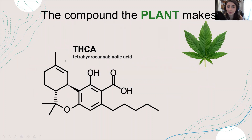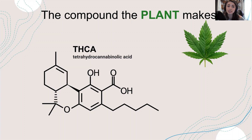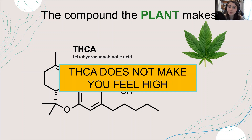The compound that the cannabis plant actually synthesizes is THCA — tetrahydrocannabinolic acid. The acid part is really important: the plant produces all of its cannabinoids in the acidic form, and the acidic form is not as active in our body. We want to change from THCA to just THC. THCA does not make you feel high and does not have many of the medicinal benefits that THC does, such as helping with pain — which is why it's really important to activate your cannabis properly.